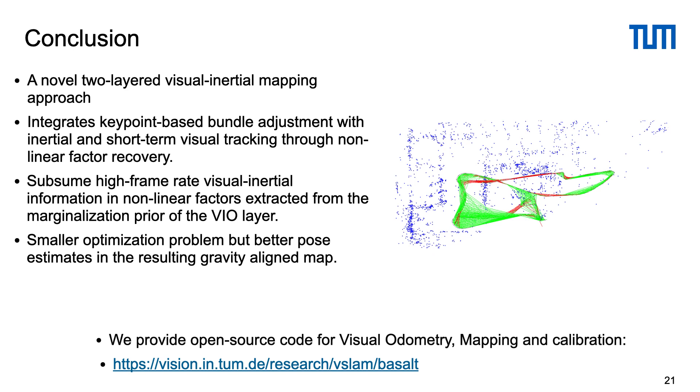To summarize, we proposed a two-layer mapping system. Our approach subsumes high frame rate visual-inertial information in nonlinear factors extracted from the marginalization prior of the VIO layer and uses them in the mapping layer to compute globally consistent gravity-aligned maps. This results in smaller optimization problem and better pose estimates. We released the visual-inertial odometry code, mapping code and calibration code of our system open source at the link provided below.